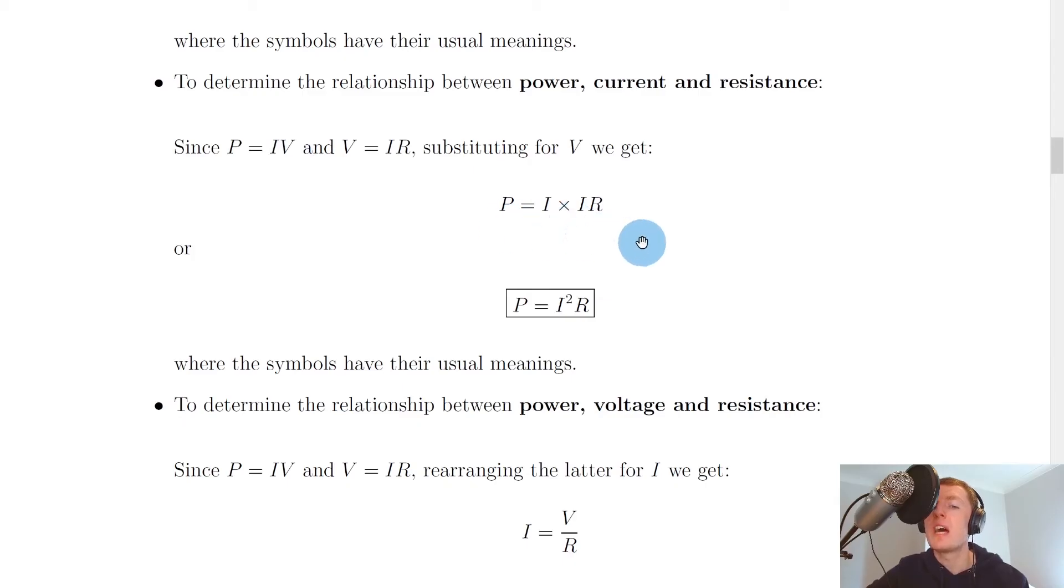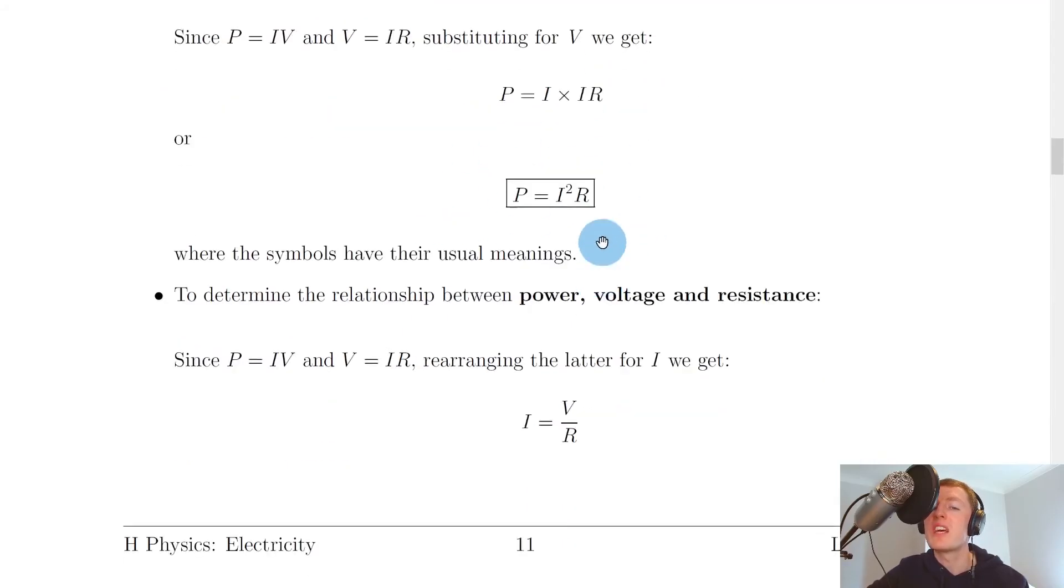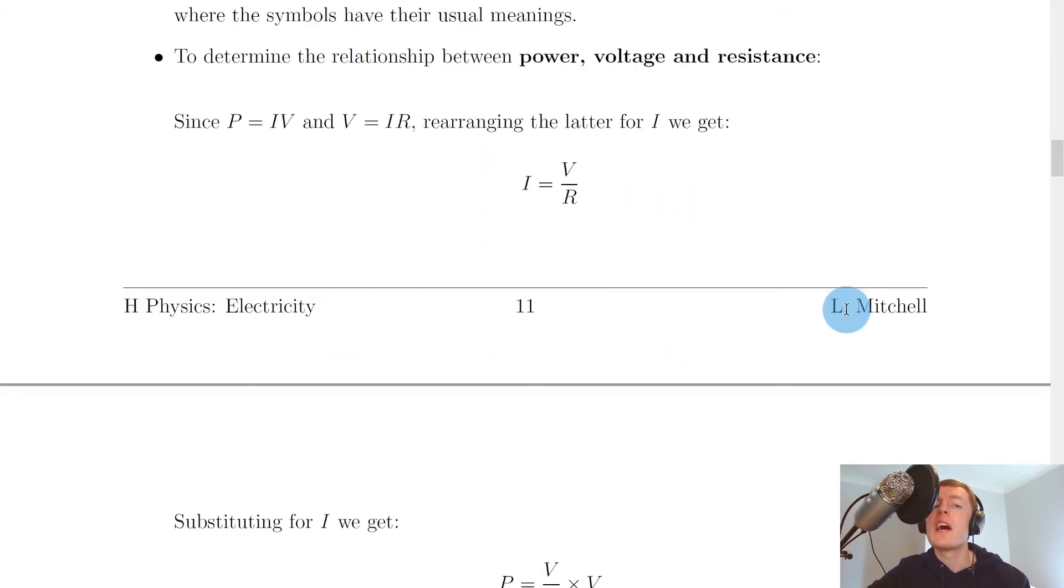So putting this IR in place of this V here, we get P = I × IR, and I times I gives us this I² term, so we get P = I²R. So if you have the current passing through a component and the resistance of the component, then you can also calculate its power, and again the symbols have their usual meanings here.